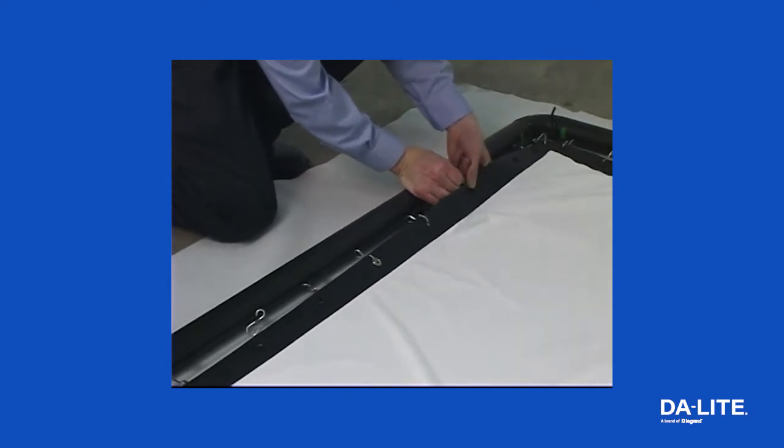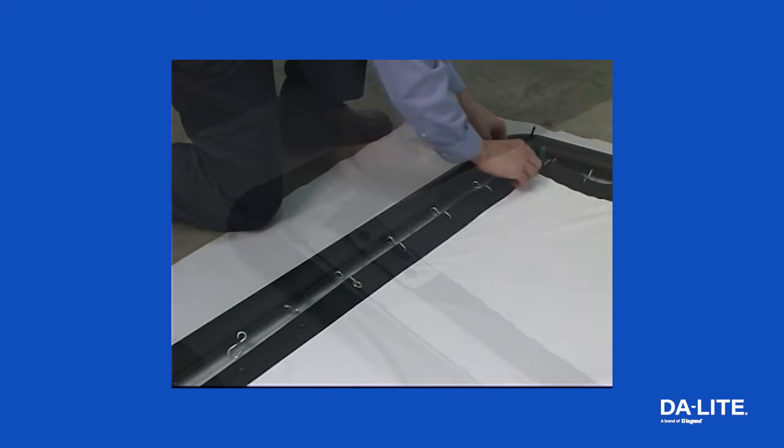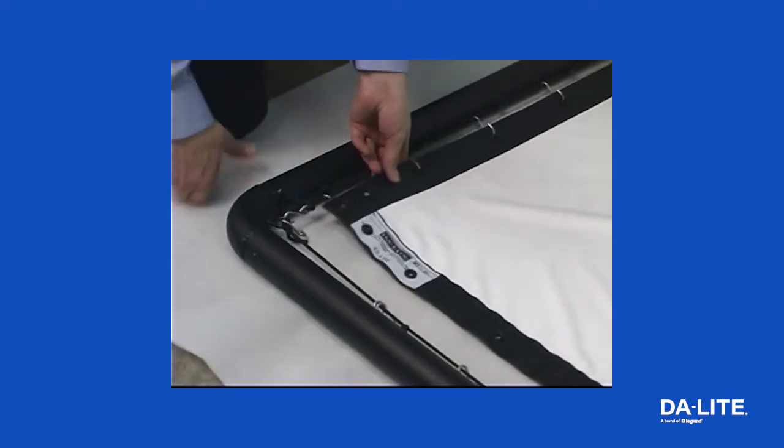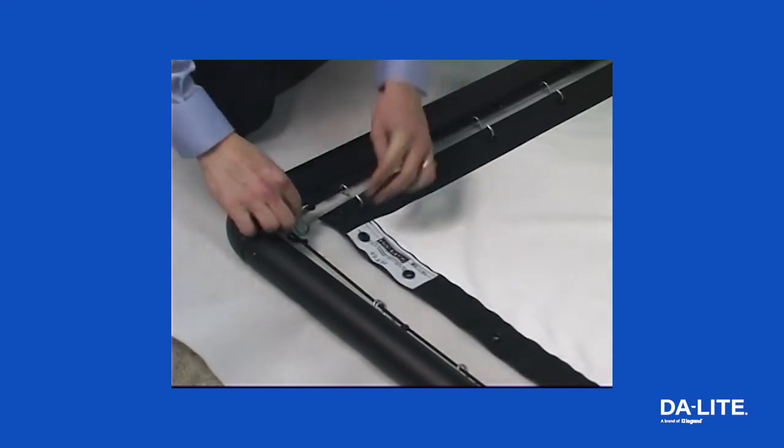Starting at the center, begin attaching the hooks on the frame into the grommet holes in the screen surface. When you get to one end, the grommet in the corner of the viewing surface should be attached to the S-hook in the corner of the frame.